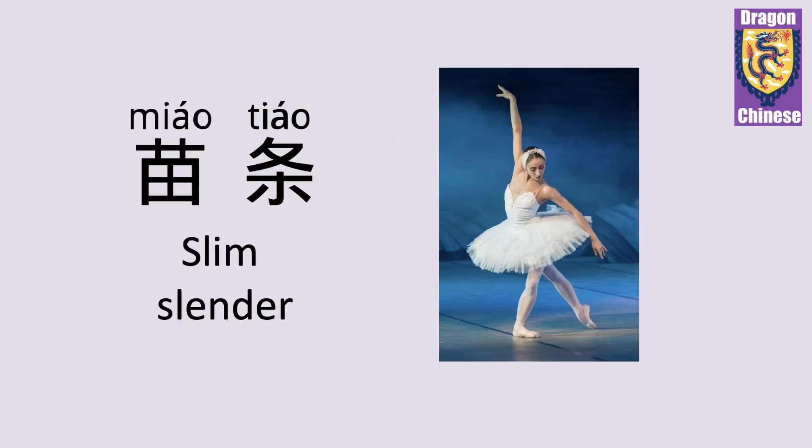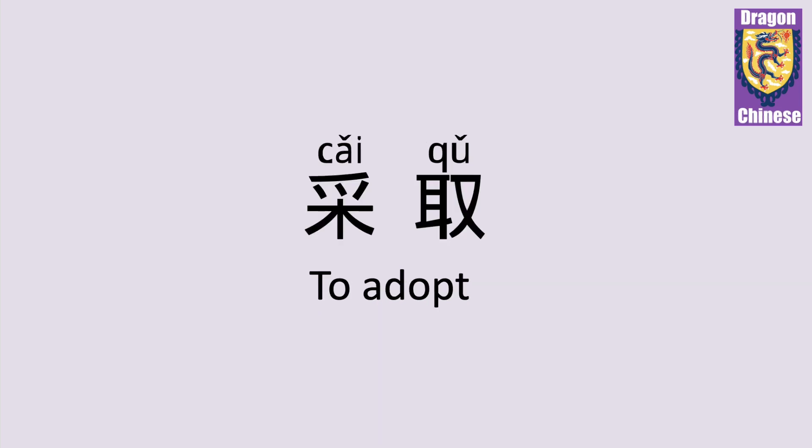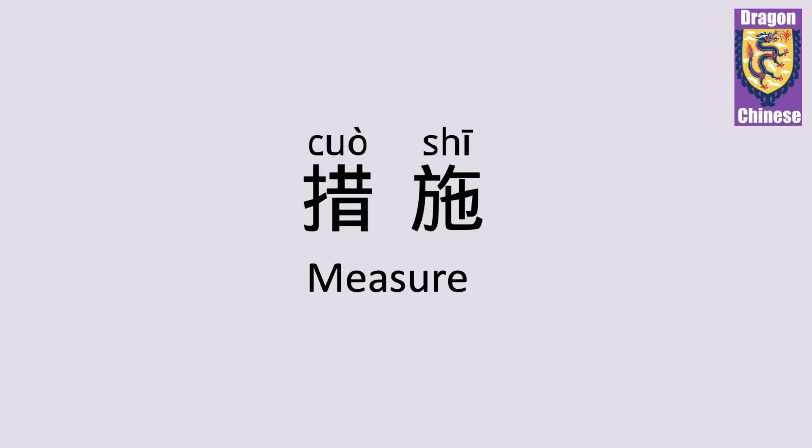苗条 — slim, slender. 借口 — excuse. 采取 — to adopt. 措施 — measure.